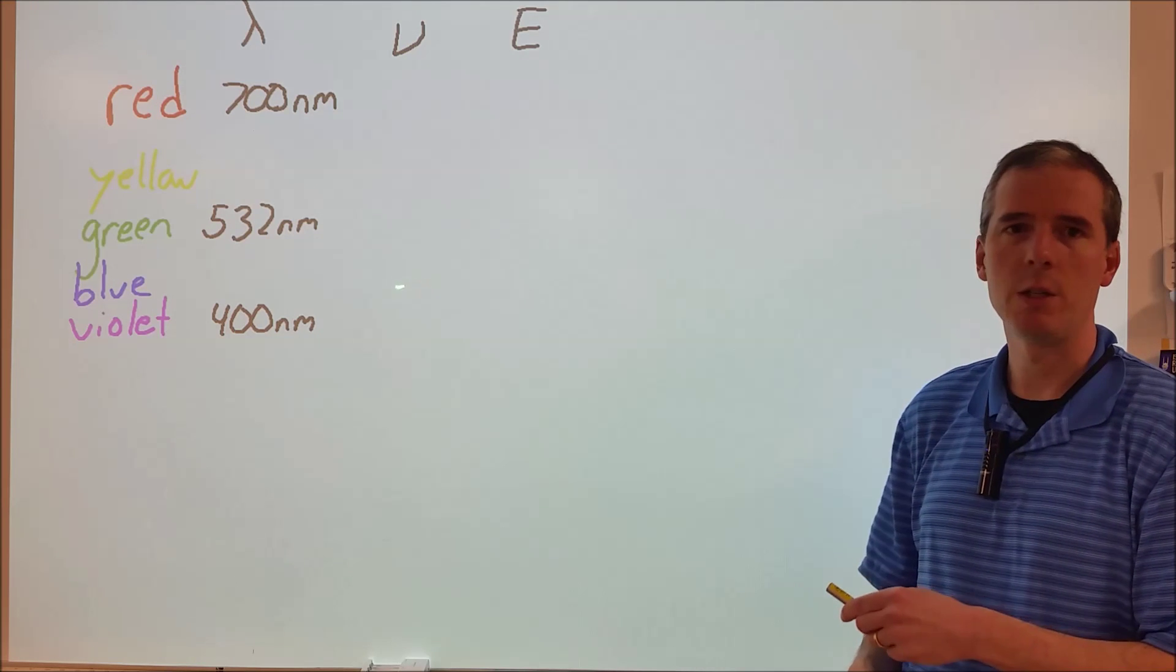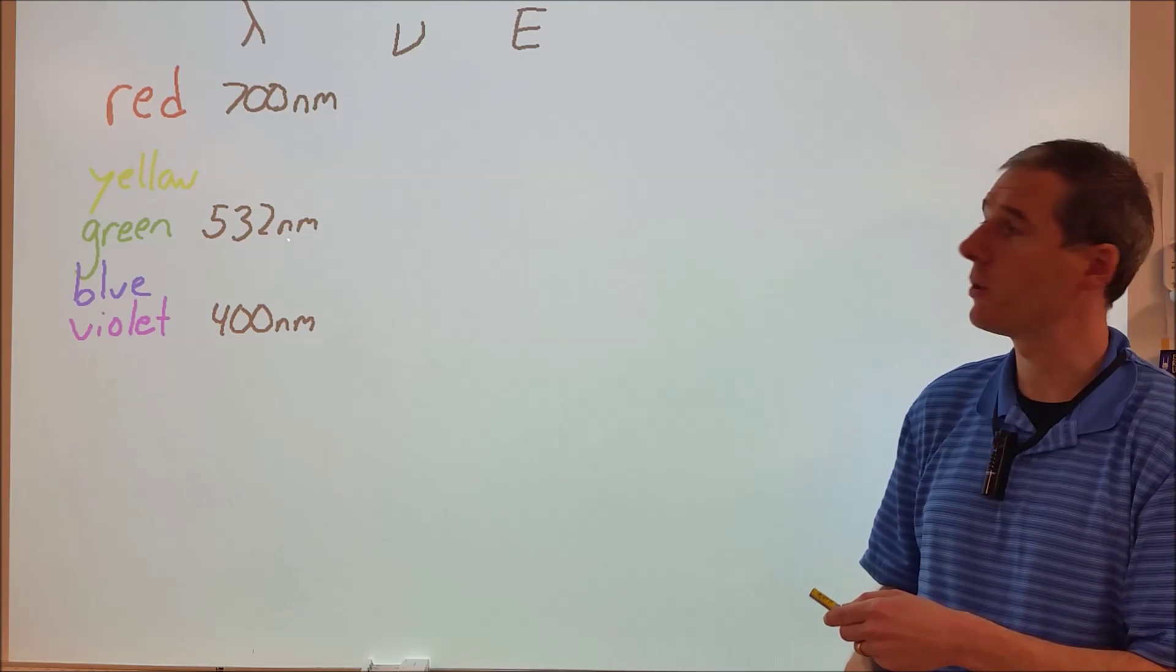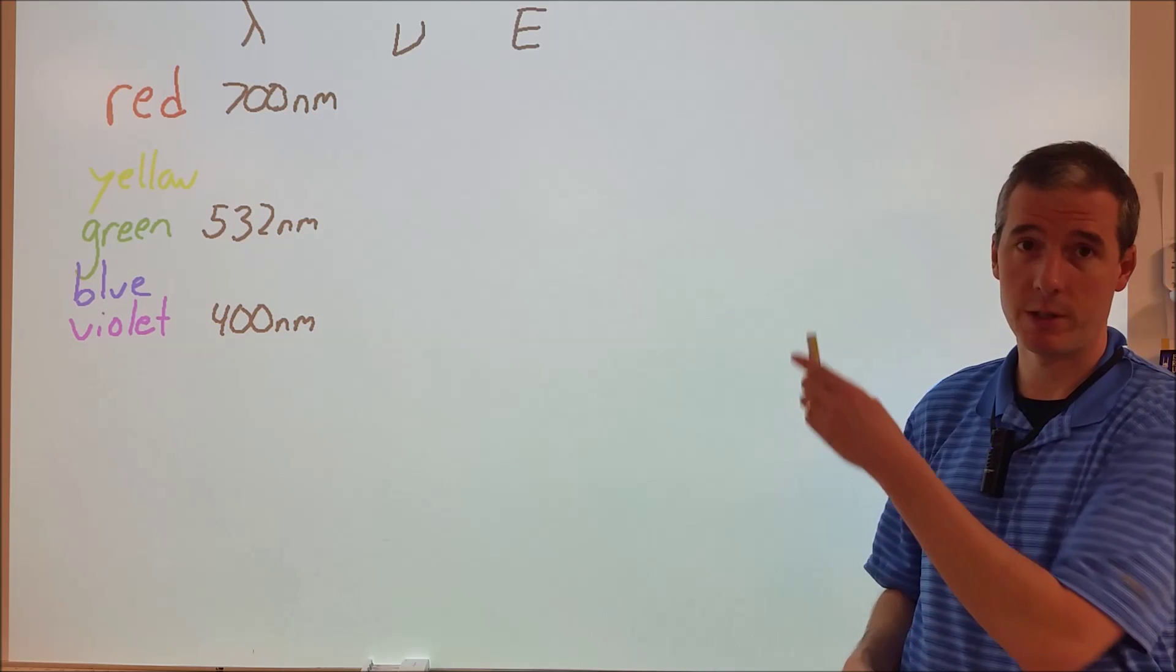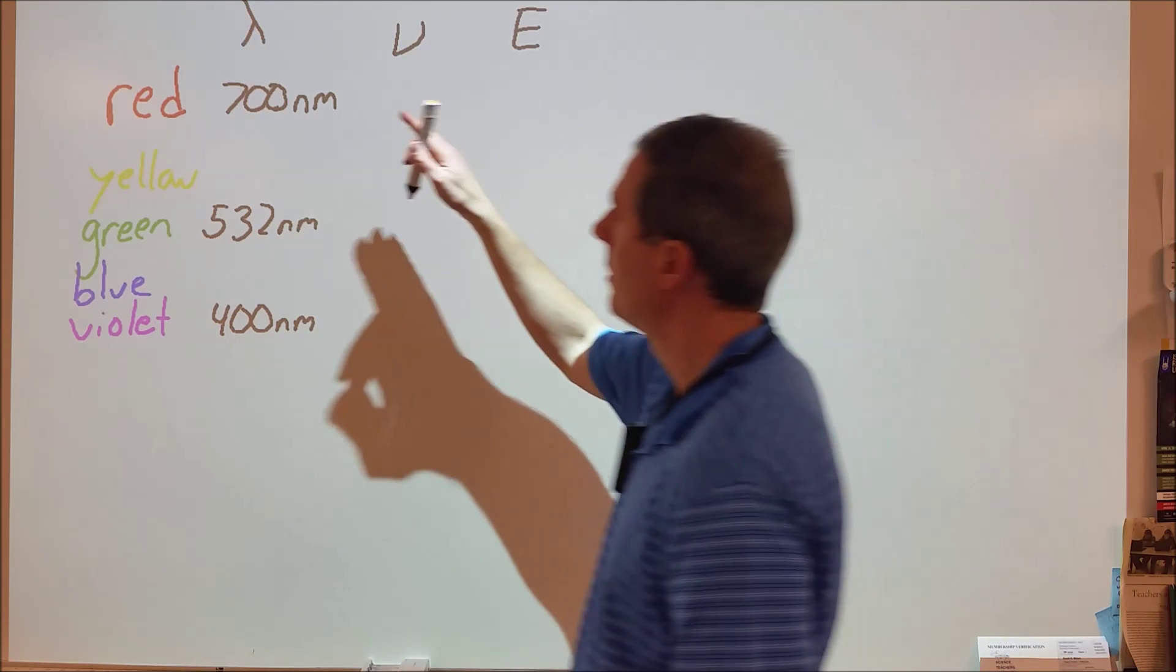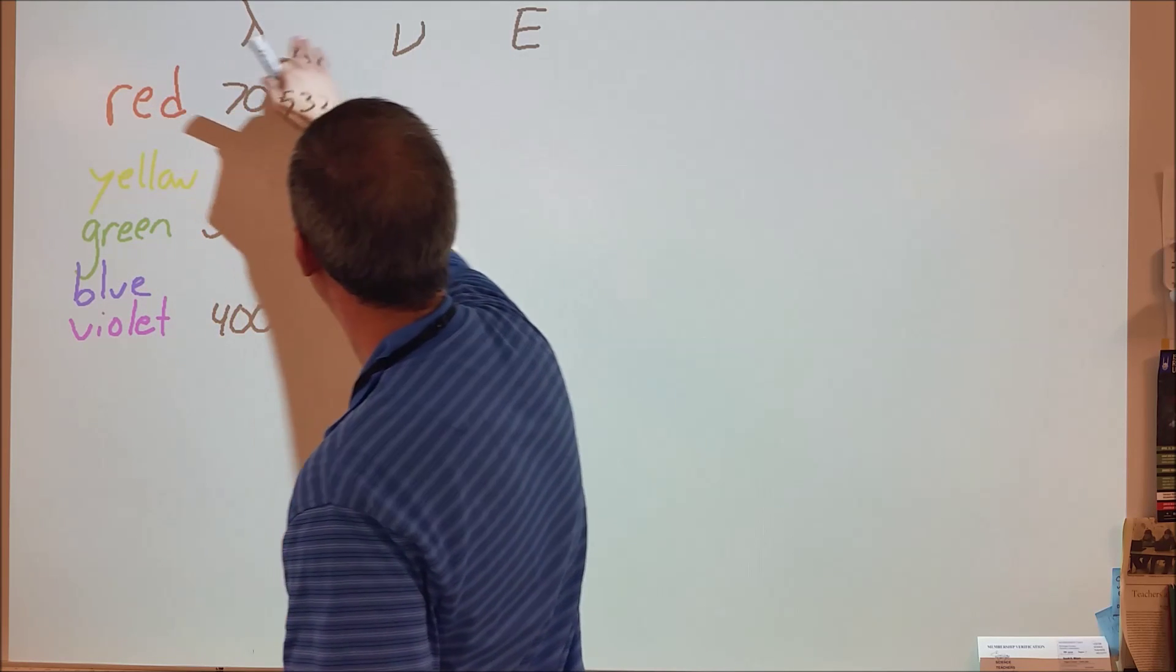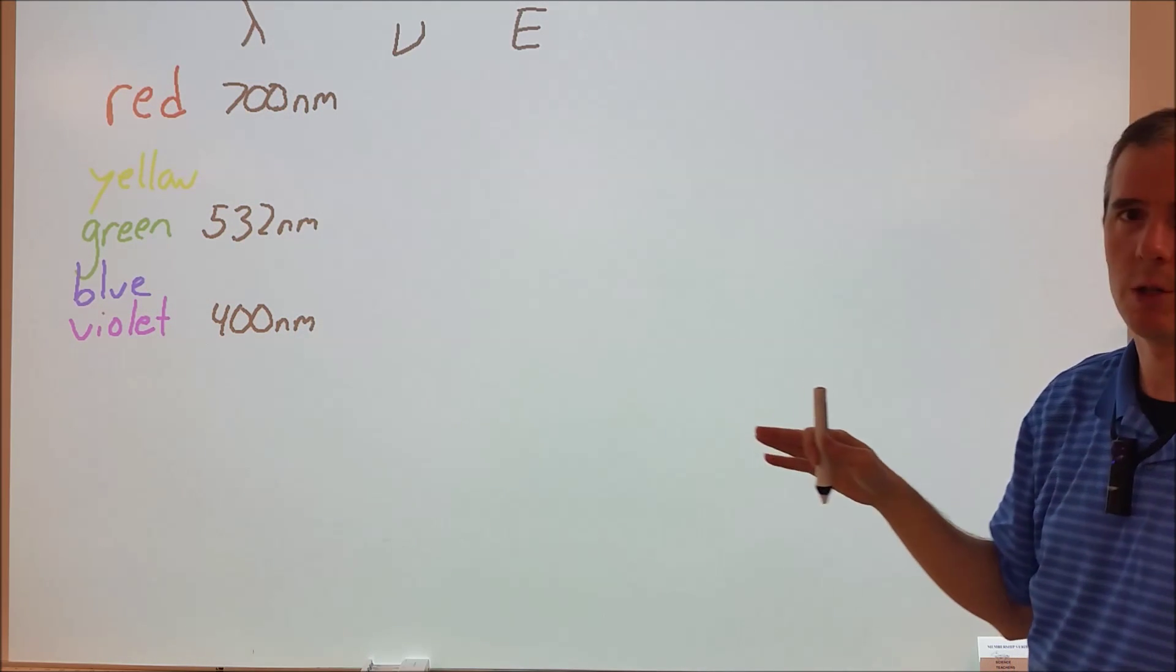There are two different calculations one can do with light. Here I have a green laser, its wavelength is 532 nanometers, it's listed directly on the laser. In light calculations there are three different variables that will come up: wavelength, frequency, and energy.